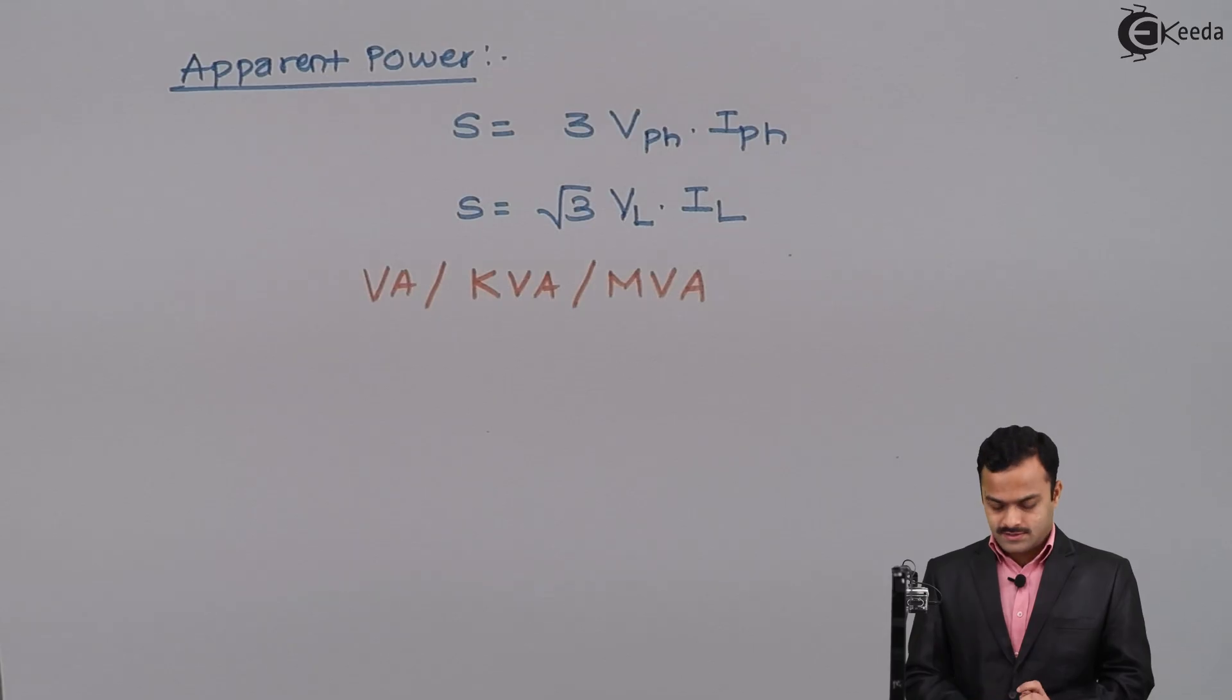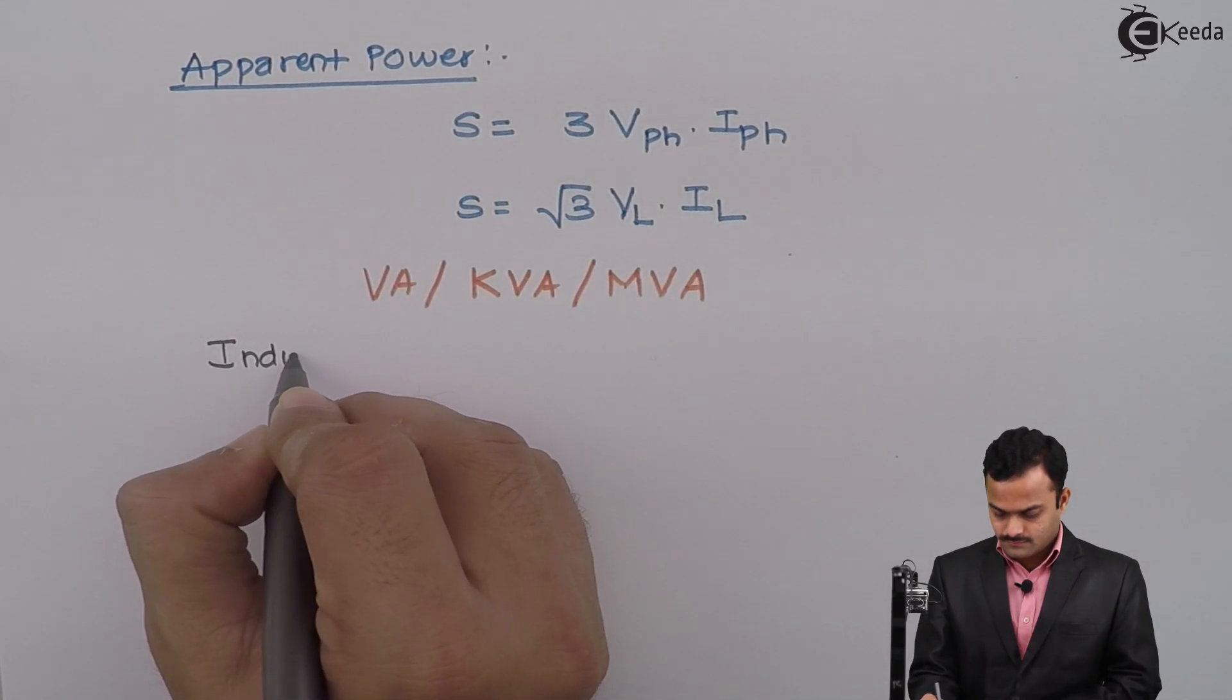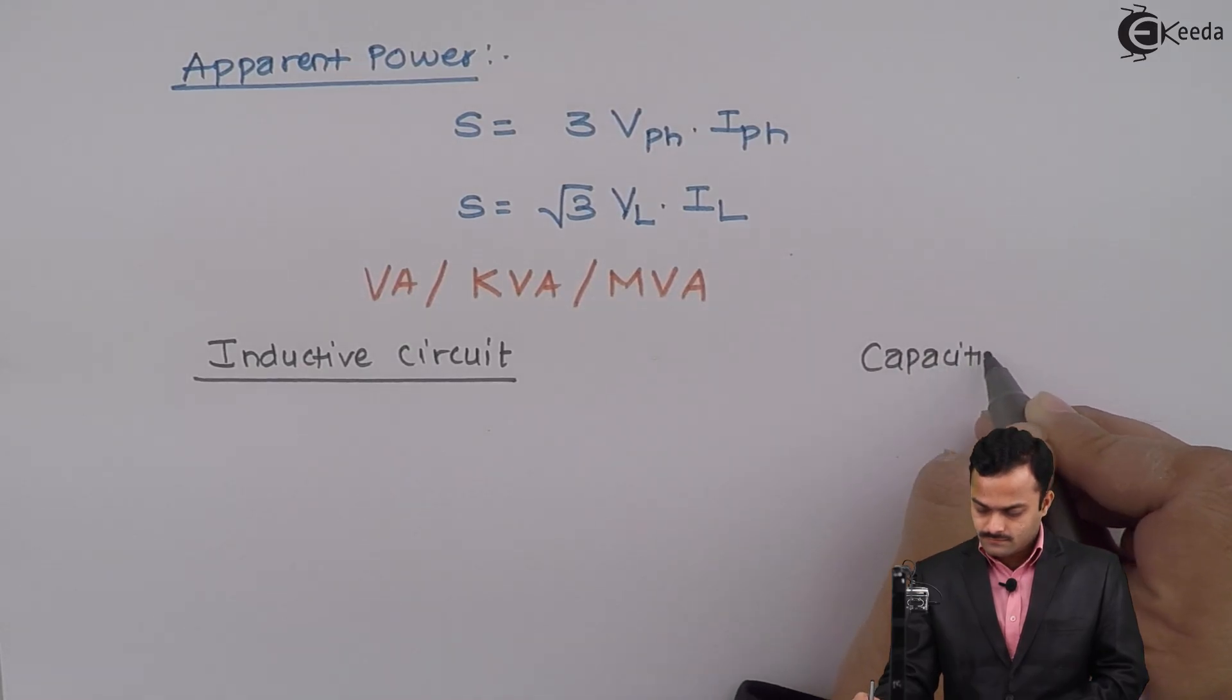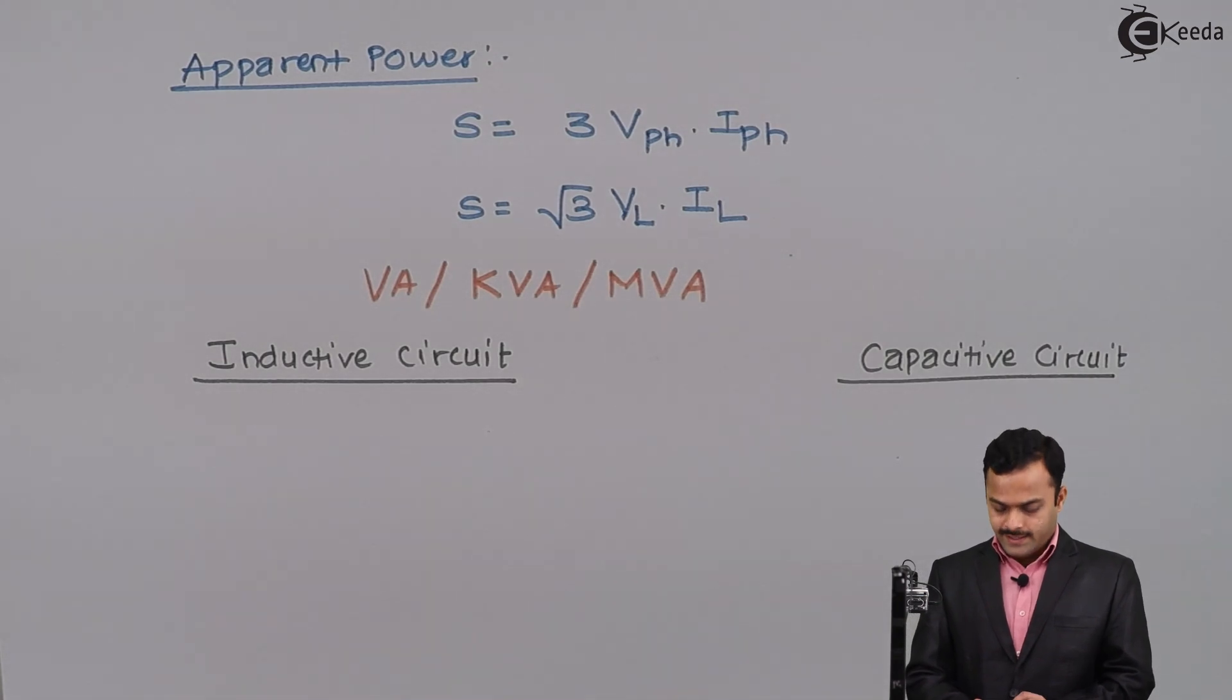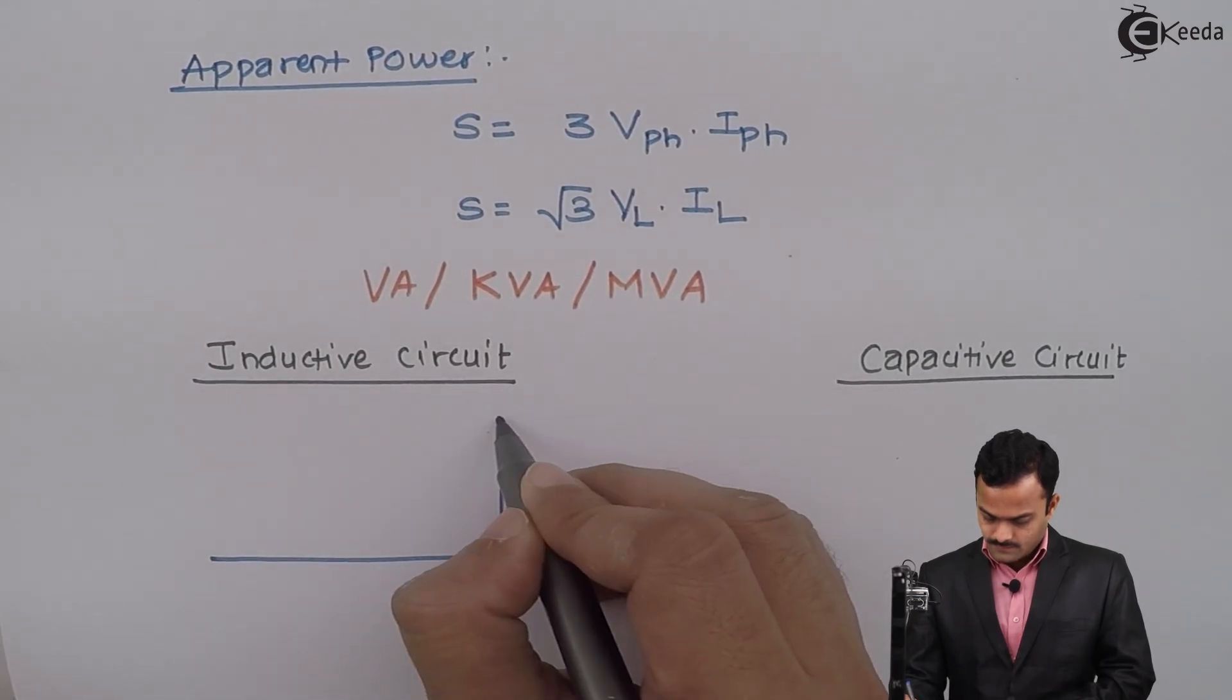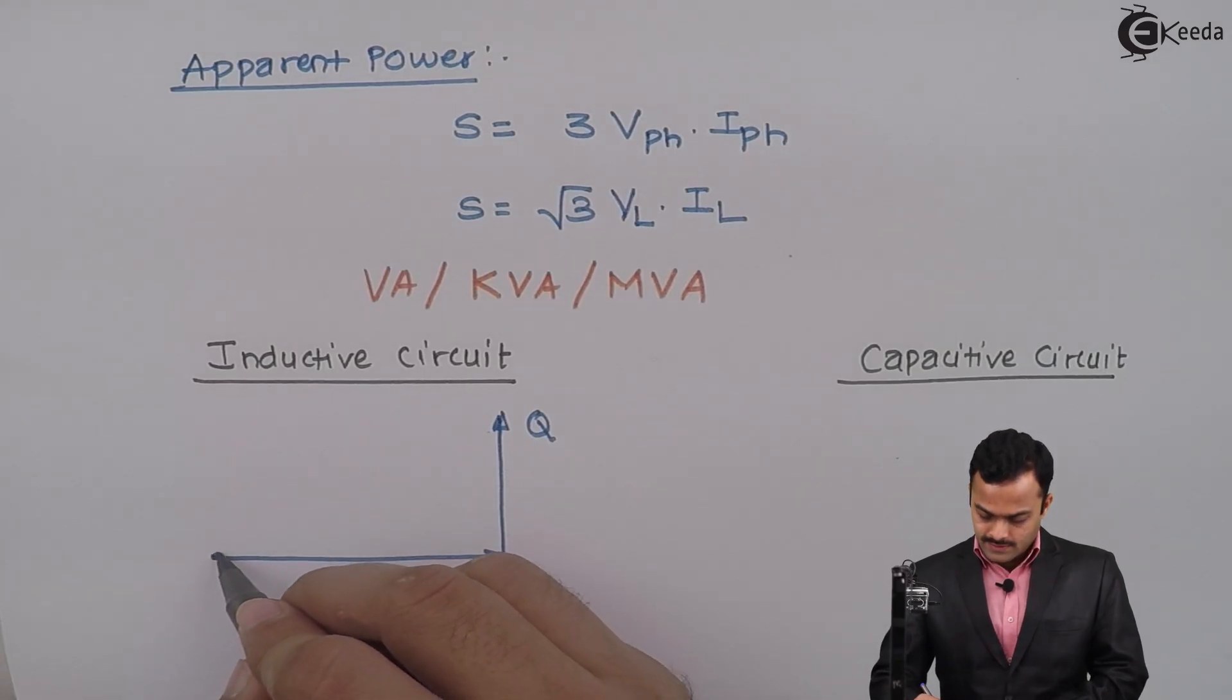So, let's consider first inductive circuit and then capacitive circuit. So, the power triangle for inductive circuit will be like this. This is P,